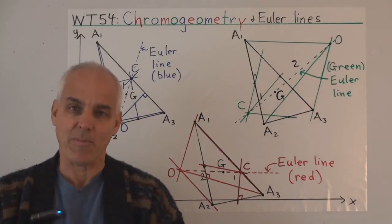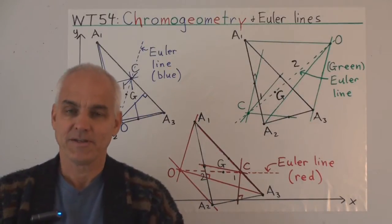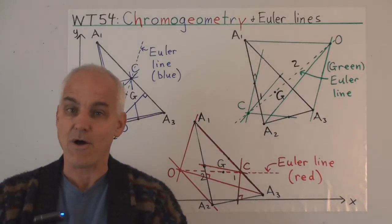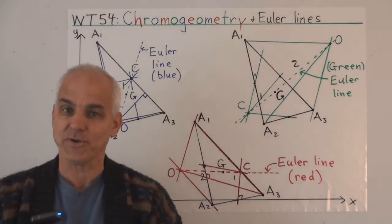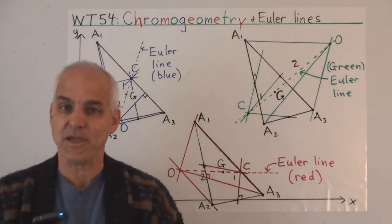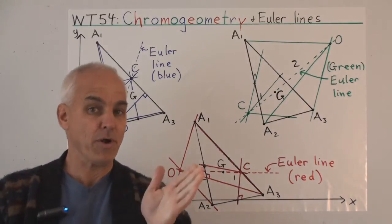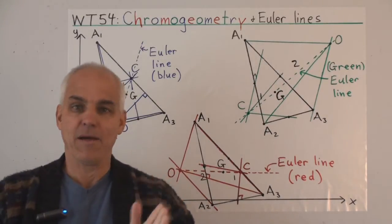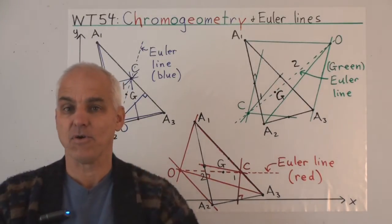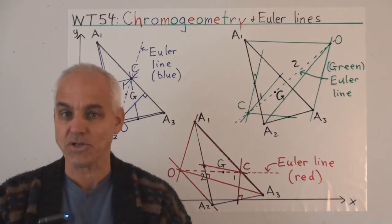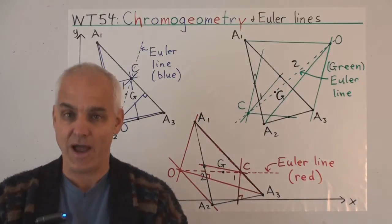Hi, I'm Norman Welpiger. Today we're going to look at how chromo geometry allows us to think about not just one Euler line, but three different Euler lines associated to a triangle.